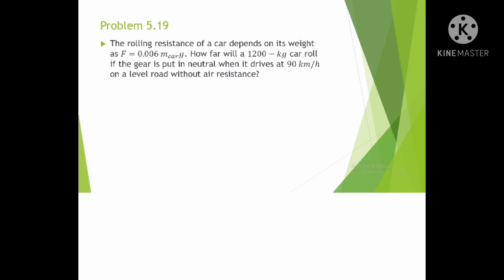Now that we know what thermodynamics is, let's proceed to solve problem 5.19. The rolling resistance of a car depends on its weight as F equals 0.006 times m sub car times g. How far will a 1200 kilogram car roll if the gear is put in neutral when it drives at 90 kilometers per hour on a level road without air resistance?